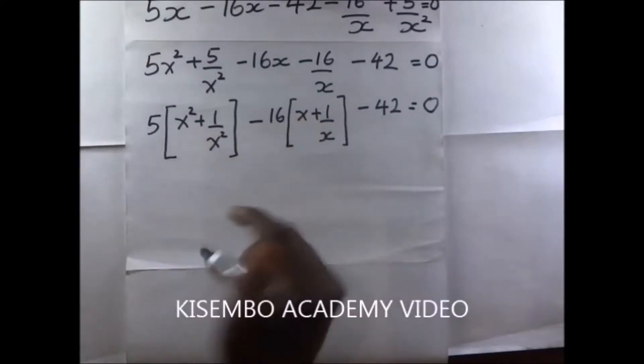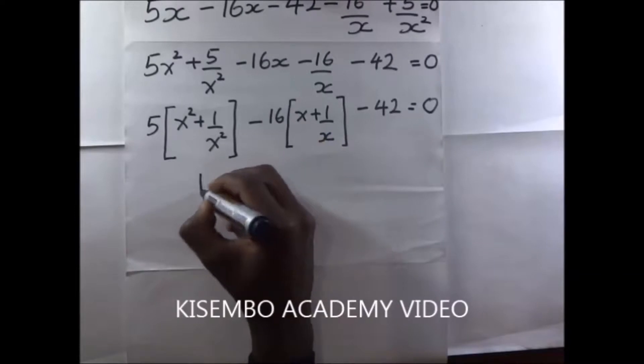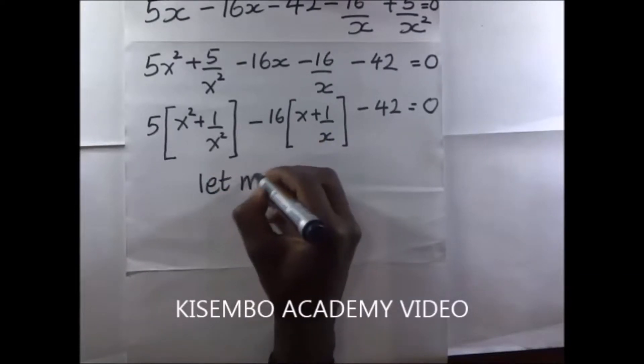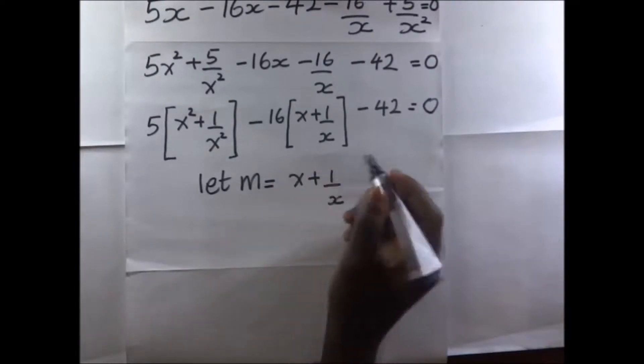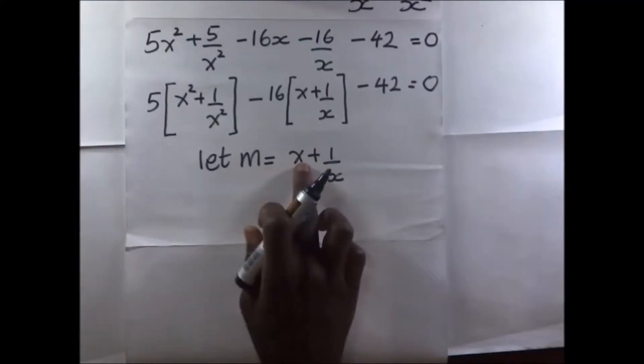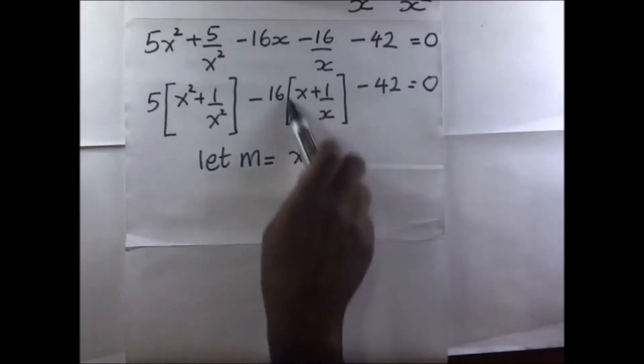Since we have put this in the brackets, let's say let M, let's call this a letter M. So if M is equal to x plus 1 over x, so it means that this can be the value of M.